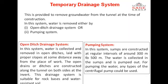The first is the open ditch drainage system and the second is the pumping system. In the open ditch drainage system, ditches or galleries are provided in the tunnel where there is a natural or proper slope. Water is collected and removed through open ditches laid with proper slope at some distance away from the place of work. These open drains are constructed along the tunnel on both sides at the bottom or side portion of the tunnel. This system is very suitable for rock bases and water-resistant soil.